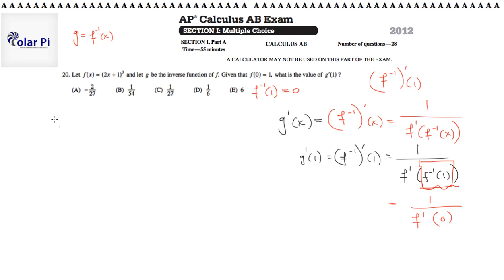So we have 1 over f prime of f inverse of 1 is clearly 0, as I just showed you. And so then, since you have f of x, you could get to f prime of x very easily. It's 3 times 2x plus 1 squared times 2, which simplifies to 6 times 2x plus 1 squared. So that's f prime of x. So f prime of 0 is going to equal 6 times, well, 2 times 0 is 0, so 0 plus 1 squared, which is 6.